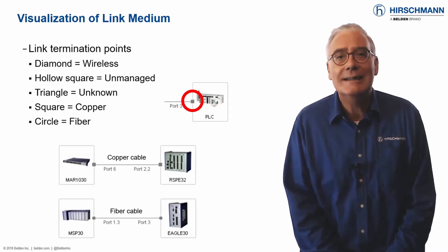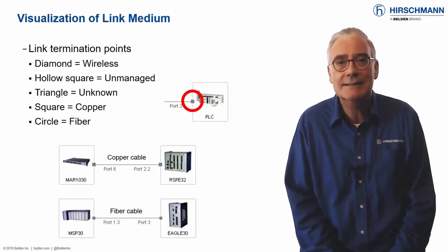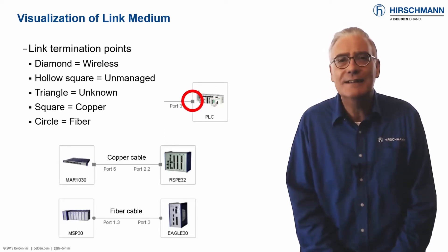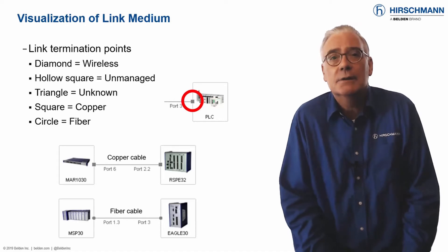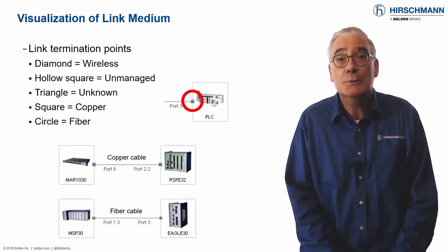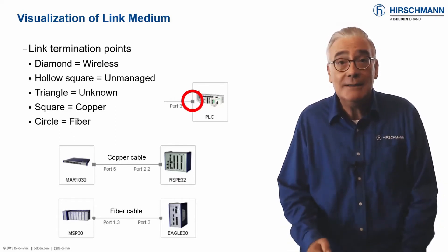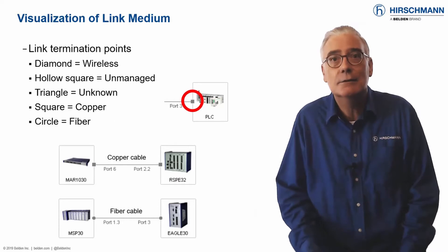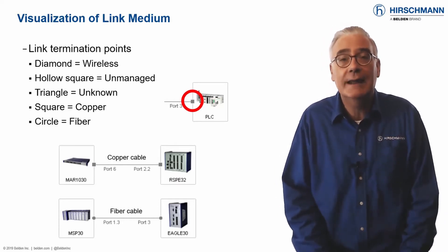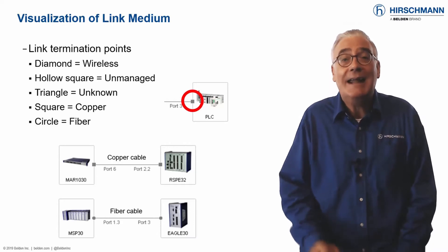Visual information is easier to digest than text-based information. A good graphic can convey a lot of information quickly and concisely. This is why we've spent a great deal of design effort on the Industrial HiVision graphical user interface. Many network management systems use a line between two devices to represent a connection, but as a network administrator, you need a lot more information than just this. It's important to know the medium used for the connection — is it copper, fiber, or wireless? This information is available to you at a glance.